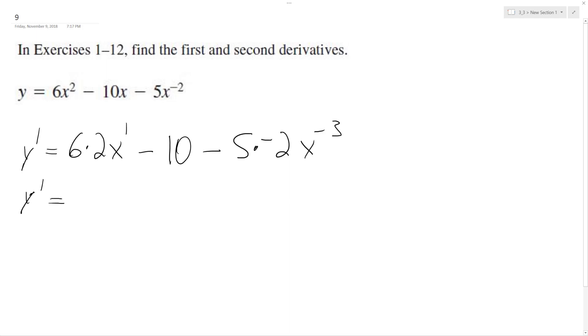So y prime ultimately ends up being 12x minus 10 plus, because of the negative 2, 10x raised to the negative 3.